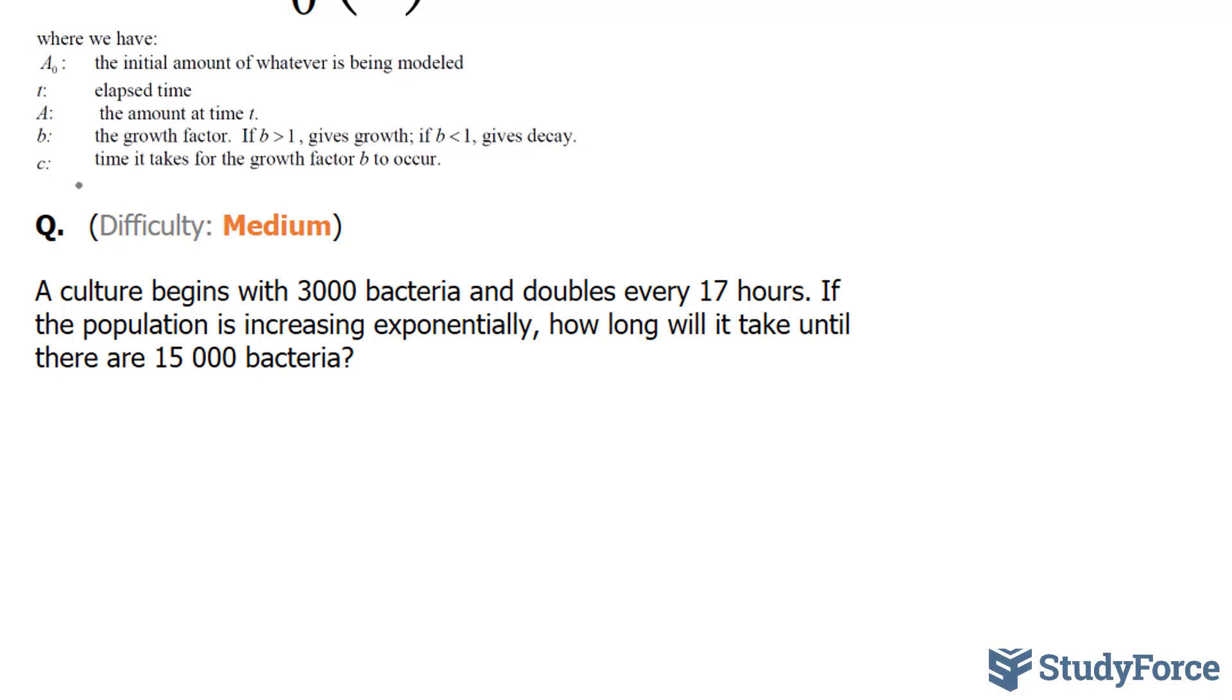So let's reread the question, and this time assign these numbers to the appropriate letter. A culture begins with 3,000. That's your initial amount, so that's going to be A initial.